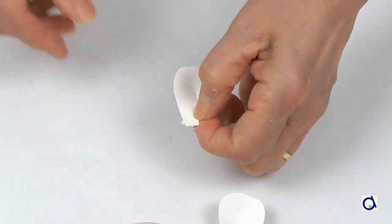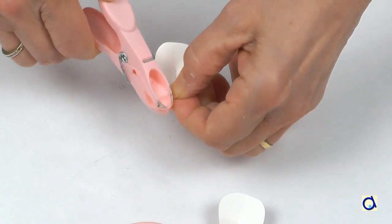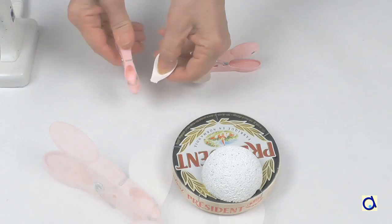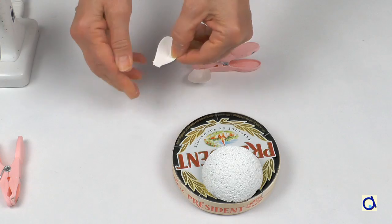Hold in place with a clothespin. Proceed the same way for the other ear. When the glue is dry, remove the clothespins.